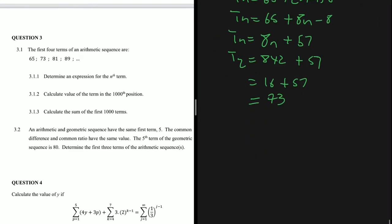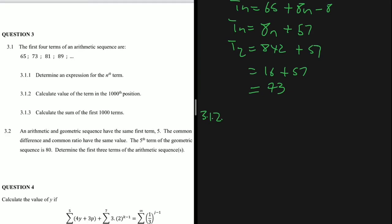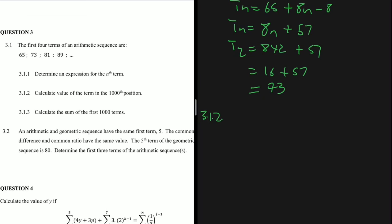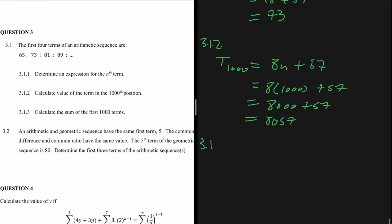Question 3.1.2 asks us to calculate the value of the 1000th term. So t1000 = 8(1000) + 57 = 8000 + 57 = 8057. That is our 1000th term.